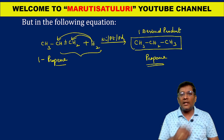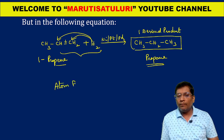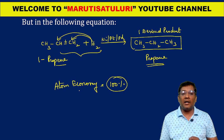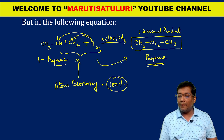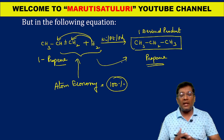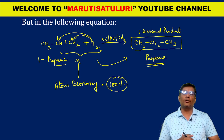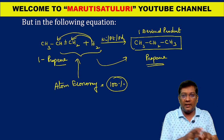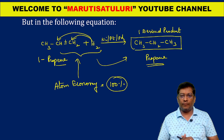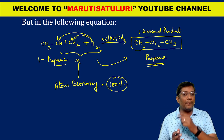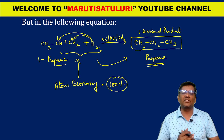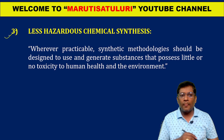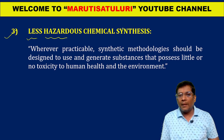Here, two reactants participated and only one desired product is produced. The atom economy for this type of reaction is 100%, because all the reactants participated in the chemical reaction and formed only one desired product with no byproduct at all. This type of chemical reaction is said to be a green reaction.